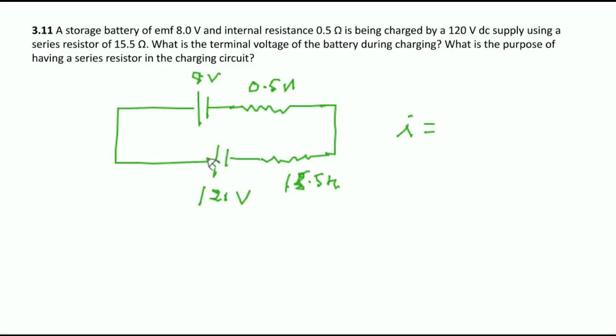Why I made like this is very important. Current will flow here in the 120 - this is the external source to charge the storage battery. Charging means current enters from positive end to negative end. If current flows from positive to negative it's called discharging.